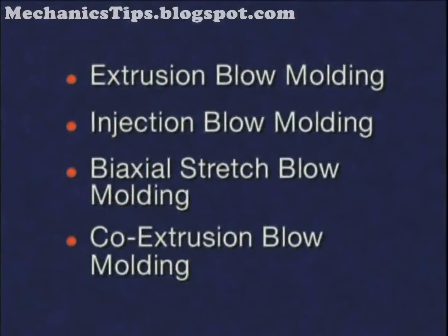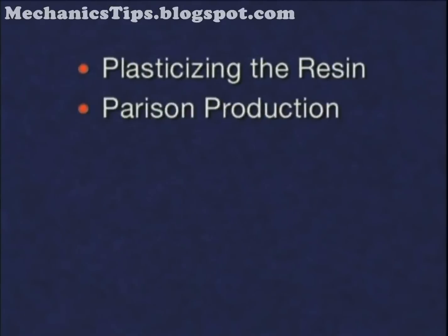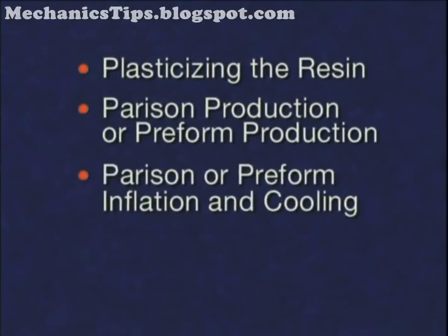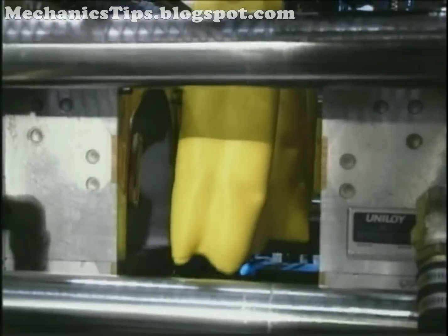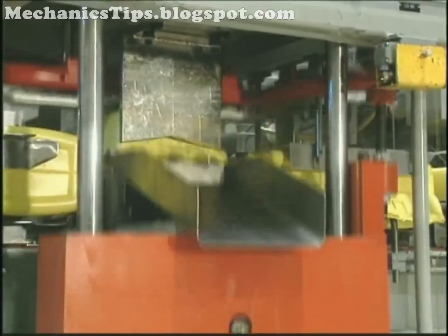In addition, these blow molding processes all share four common stages: plasticizing or melting the resin; parison production when referring to most blow molding operations, or preform production when referring to biaxial stretch blow molding; parison or preform inflation and cooling in the blow mold; and ejection from the blow mold. A fifth stage is necessary in extrusion blow molding for trimming and finishing the product.